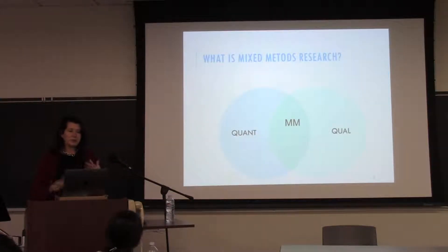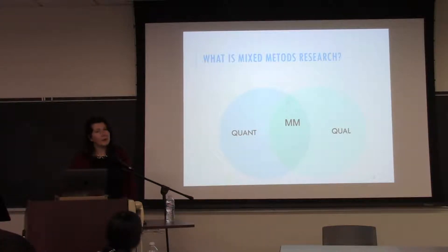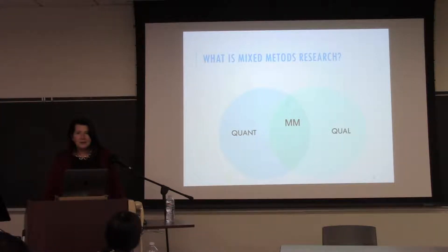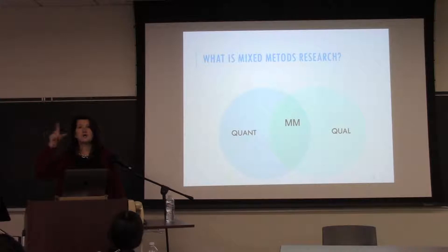So when we think about mixed methods — who has a working definition? You combine the two — you combine quantitative and qualitative. That's right. Any other definitions? When you use elements of both — that's also true. Would a Likert scale be an example? Likert scales are pretty quantitative, although you can code qualitative evidence to go along with the scale.